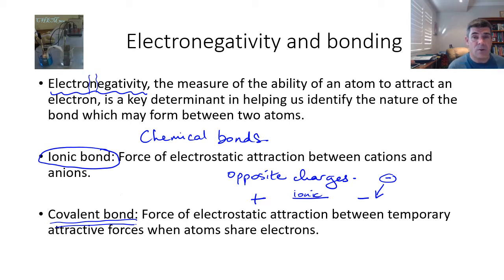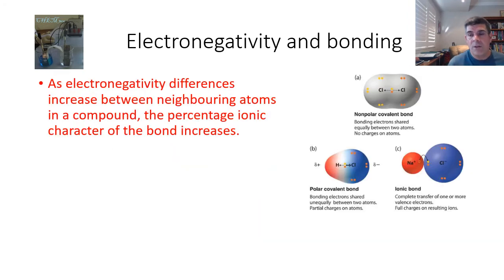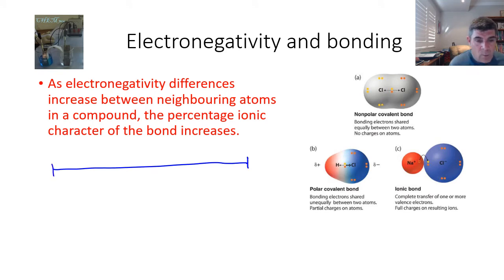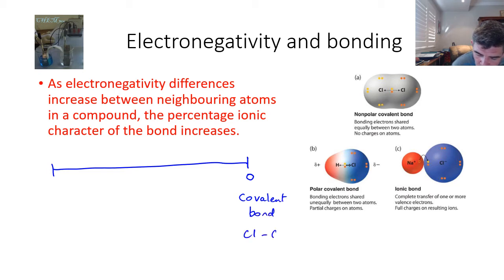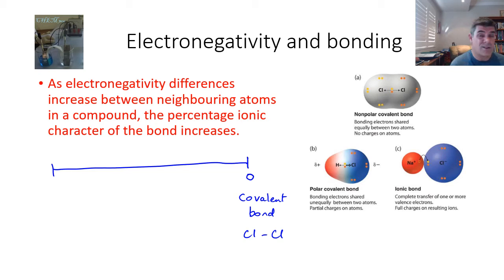Hopefully this won't be completely new to you, so let's take this a little step further. As electronegativity differences increase between two atoms in a compound, the percentage ionic nature of the bond increases. We need to be aware that this is a continuum, where a difference of zero at one end effectively means we have a pure covalent bond — such as between two chlorine atoms. The electronegativity difference between two chlorine atoms is zero; they both exert exactly the same force on the electrons, so there is no difference between them.